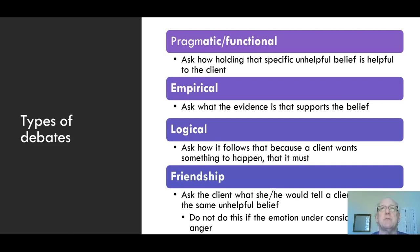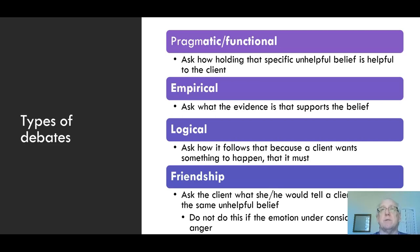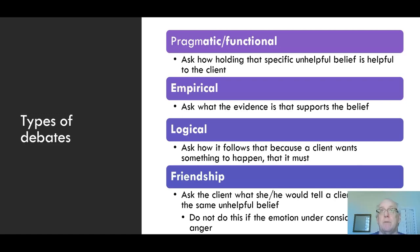We don't stop at one type of dispute — we try all of them, since we never quite know which will work best for any given client. The empirical dispute asks: 'What's the evidence that supports the belief?' For instance, if someone says 'I'm just a total loser,' we challenge: 'Where's the evidence you can't walk, can't chew gum, can't do your job?' This moves them toward recognizing they may have exaggerated and global kinds of unhelpful beliefs.